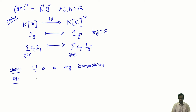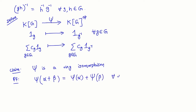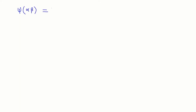We need to check that ψ preserves addition and multiplication. Addition is easy — because at the level of vector spaces it is just a linear transformation, so ψ(α + β) = ψ(α) + ψ(β) for all α, β in KG. The key point that needs checking is really the multiplication: if I take ψ(αβ), I want the answer to be ψ(α)·ψ(β) in KG^op — that is, I want ψ(αβ) = ψ(β)ψ(α) in the usual ring R.